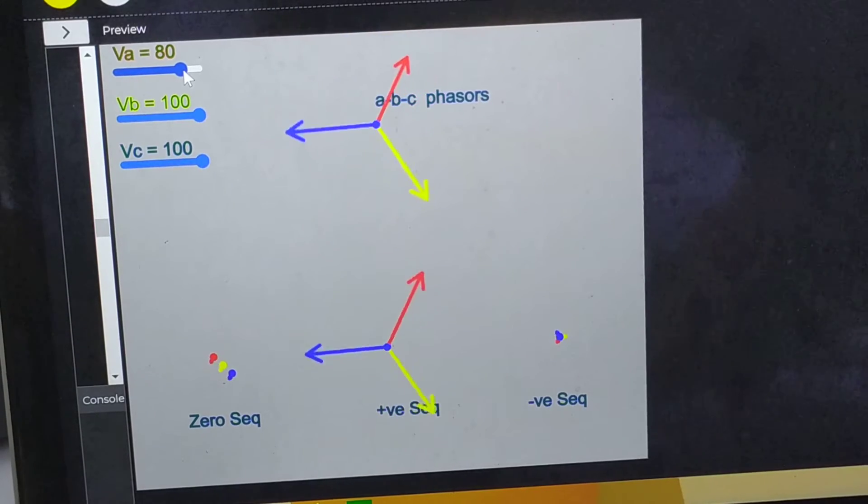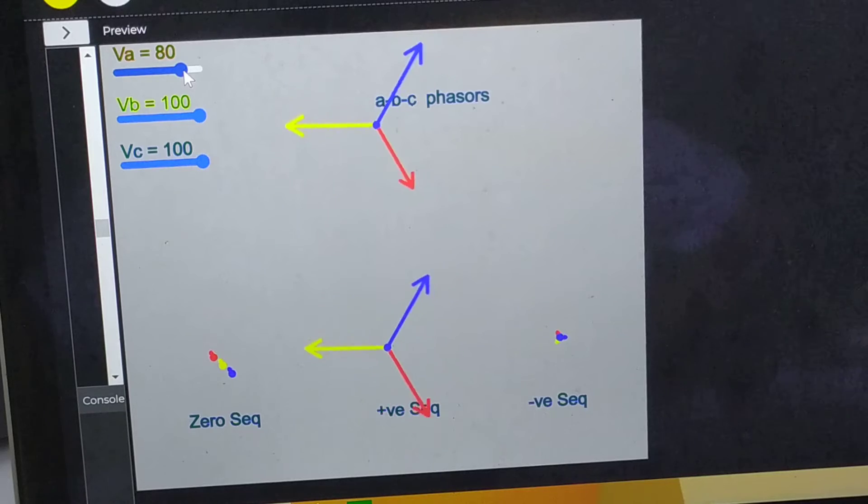So A phase voltage is 80, B phase is 100, C phase is 100. You can see that there is a small amount of zero sequence and negative sequence.